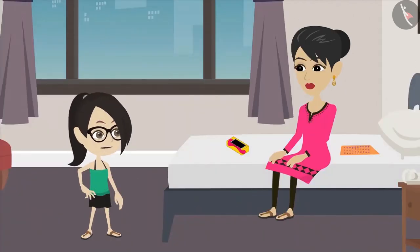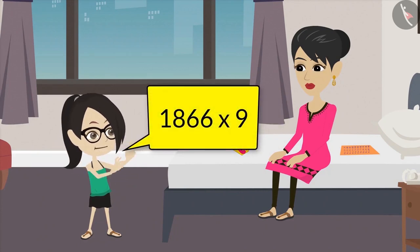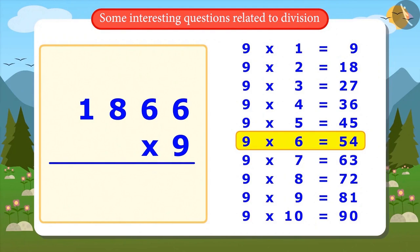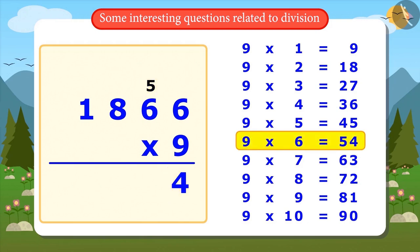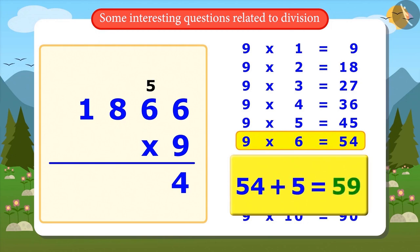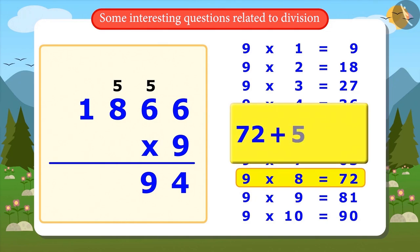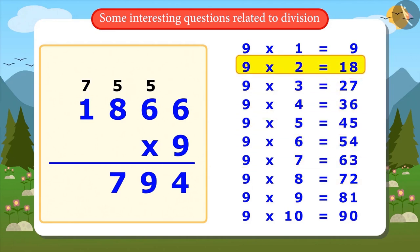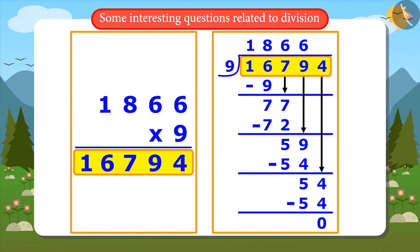To verify, Vandana multiplies 1,866 by 9. Starting: 9 sixes are 54, so 4 is written and 5 is carried over. Next, 9 sixes are 54, adding 5 gives 59, placing 9 and carrying 5. Then 9 eights are 72, adding 5 gives 77, placing both digits. Finally, 9 ones are 9, adding 7 gives 16. The result is 16,794 — both numbers are equal, confirming the division was done correctly.